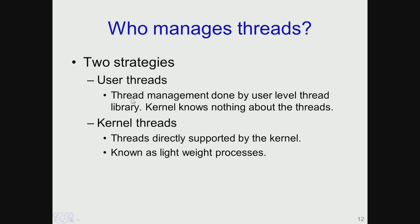In order to do this, the two strategies that are available are known as user threads and kernel threads. User threads are threads where the thread management is done by a user-level thread library. Typically in this model, the kernel does not know anything about the threads running. In kernel threads, the threads are directly supported by the kernel and these are sometimes known as lightweight processes. We will look at user threads and kernel threads in more detail, taking one at a time.